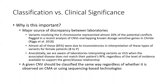Why is making this distinction important? It's a major source of discrepancy between laboratories. In one example, variants involving the X chromosome represented almost 20% of potential conflicts flagged in a recent analysis of ClinVar CNVs overlapping known dosage-sensitive genes. Of these, 85% were due to inconsistencies in the way people classified variants observed in female patients — ranging from benign all the way to pathogenic. This historical practice of changing variant classification based on a patient's reason for referral is at odds with how sequence variants are classified, and as CNV detection improves on sequencing platforms, it's imperative that CNVs be classified using the same principles regardless of platform.